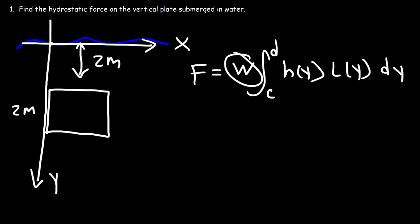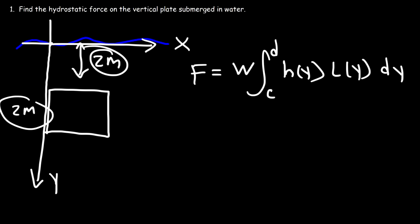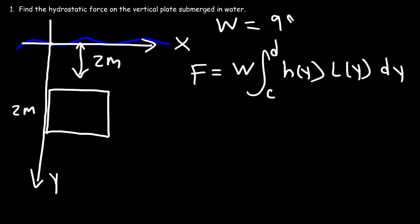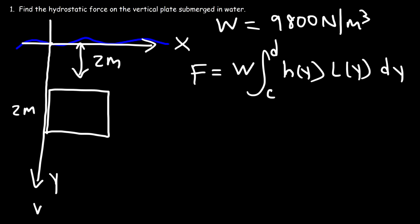The first thing you need to determine is the weight density w. Since the depth is in meters, the weight density we need to use is 9800 newtons per cubic meter. If the units were in feet, you would use 62.4 pounds per cubic foot — some textbooks may use 62.5, so go with whatever your textbook uses.